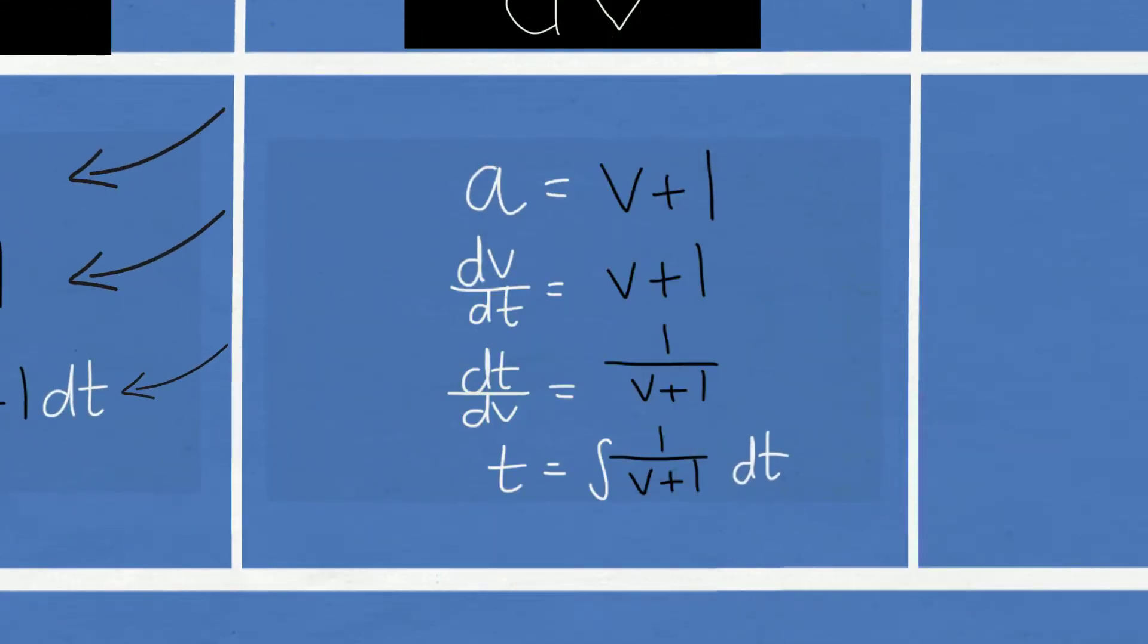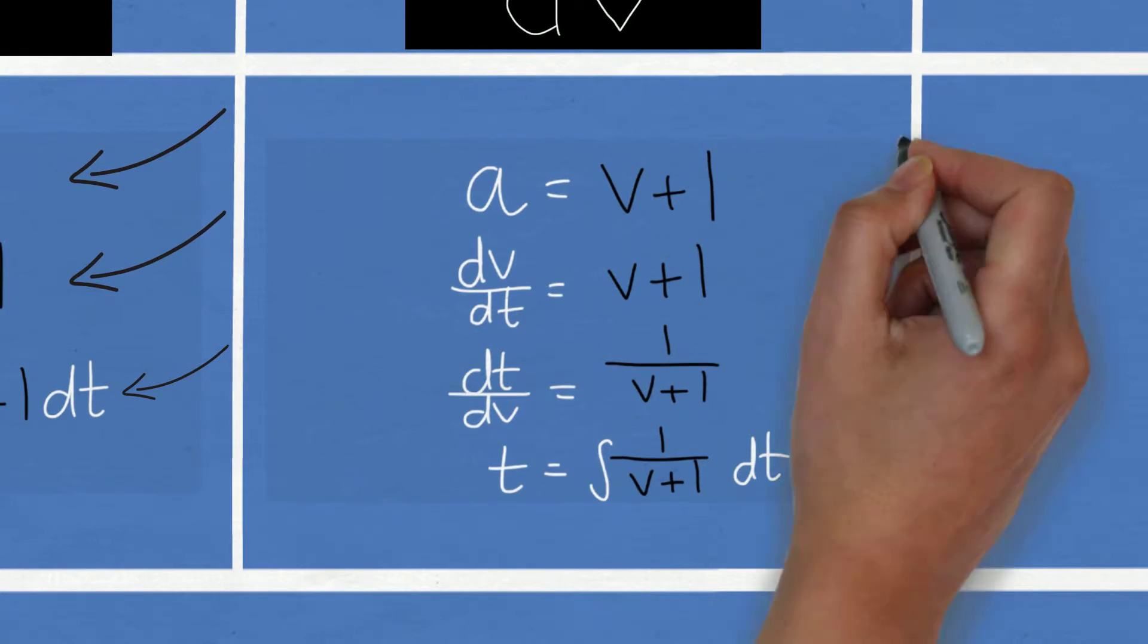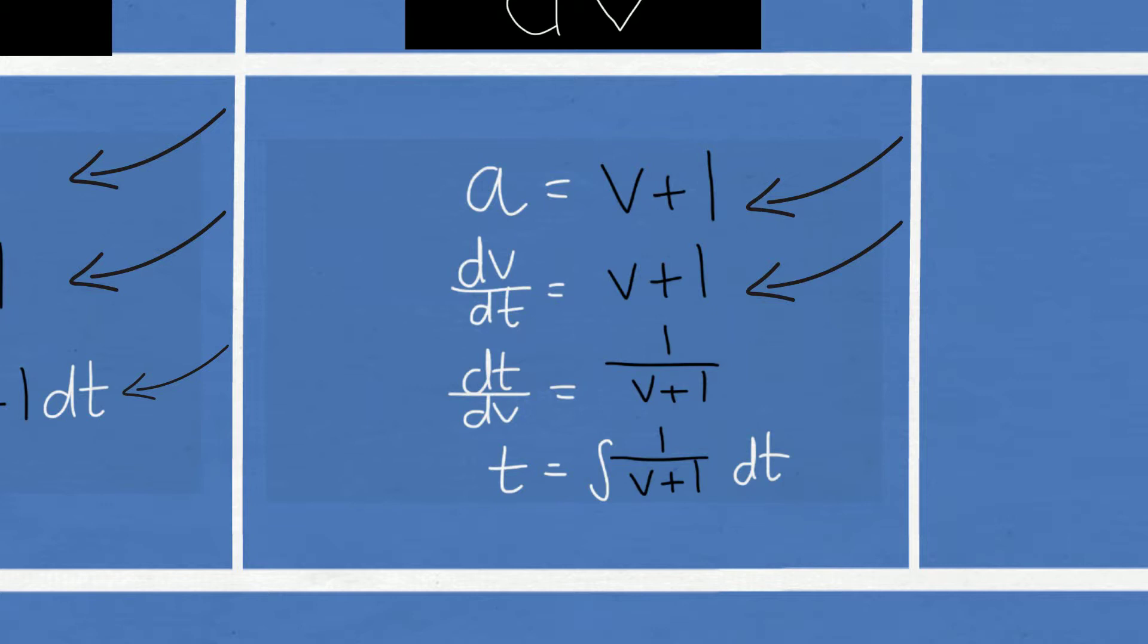An example would be you're given acceleration equals v plus 1 and you're asked to find time in terms of v or maybe velocity in terms of time. You have to flip your differential equation and then anti-diff afterwards, and then just use algebra and you got it.